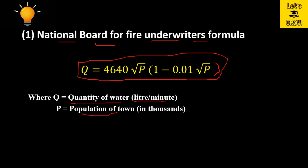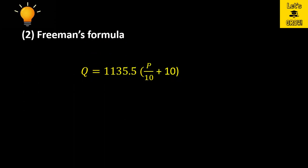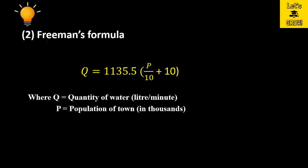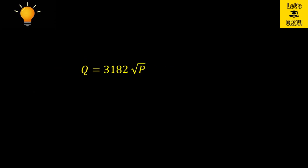The second formula is given by Freeman's and it is known as the Freeman's formula. Here you can see the formula, where Q is the quantity of water in liter per minute and P is the population of town in thousands.